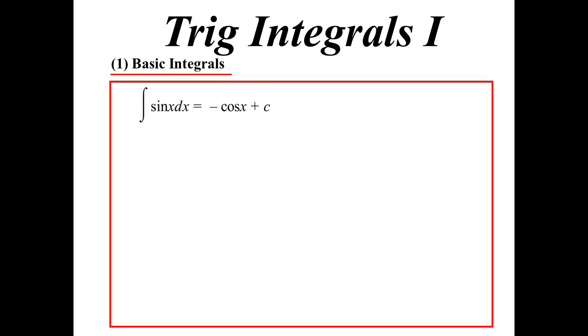Integrate sine, of course, we get negative cos. Integrate cos, we get sine. Integrate sec squared, we get tan. So we've seen all those.